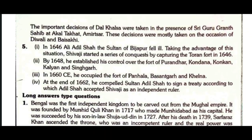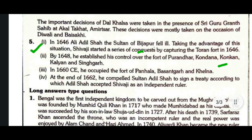Question five: Describe the early conquests of Shivaji. In 1646, Adil Shah, the Sultan of Bijapur, fell ill. Taking advantage of this situation, Shivaji started a series of conquests by capturing the Toran fort in 1646. By 1648, he established his control over the forts of Purandar, Kundana, Konkan, Kalyan, and Singara.